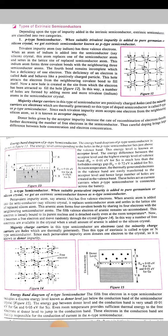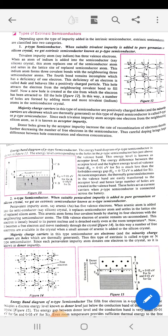For p-type semiconductors, when suitable trivalent impurity is added to pure germanium or silicon, we get extrinsic semiconductors known as p-type semiconductors.